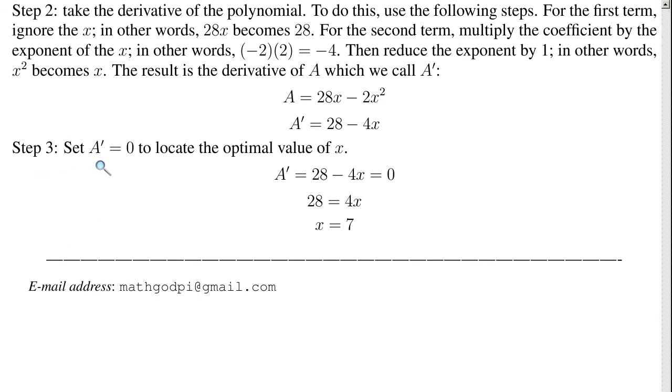Step 3. Set A prime equals to 0 to locate the optimal value of x. So A prime, the derivative that we just found, is 28 minus 4x. But to find the optimal value of x, we have to make this equal to 0. The derivative equal to 0.